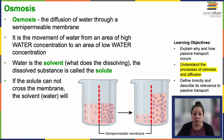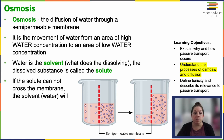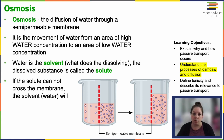Now we can talk about osmosis — this is very important. This is the diffusion of water through a semi-permeable membrane. Like already mentioned, water molecules can't simply diffuse through the membrane; they rely on special pores — aquaporins — in the plasma membrane to transport across. For osmosis, this is the movement of water from an area of high water concentration to an area of low water concentration. Water is the solvent — what does the dissolving — and the dissolved substance is called the solute.